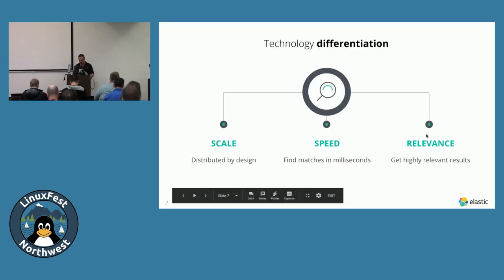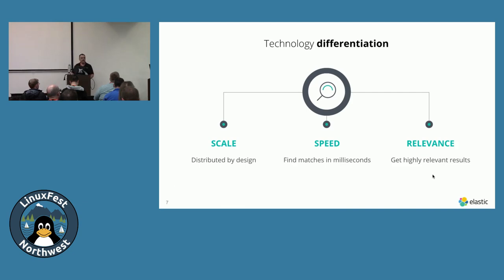At Elastic, three things are valued. First, they're not just an asset data store — they value scale. It should be easy to go from a single node on a test machine, evolve it into a full-scale test, and then into production. One of the things you'll experience is that it's very simple to do that with Elastic.